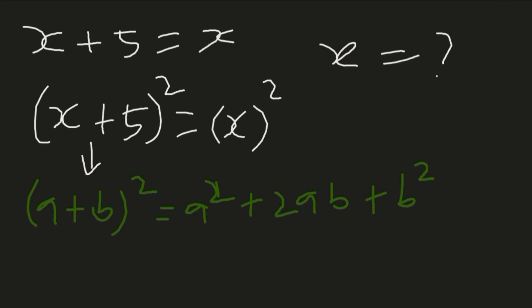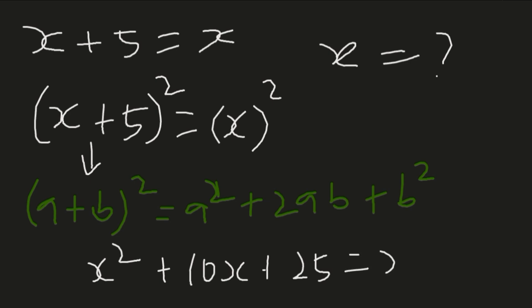So we're going to apply that. My a is x, which gives x², plus 2 times x times 5, that should be 10x, then plus b² which is 25, is equal to x².